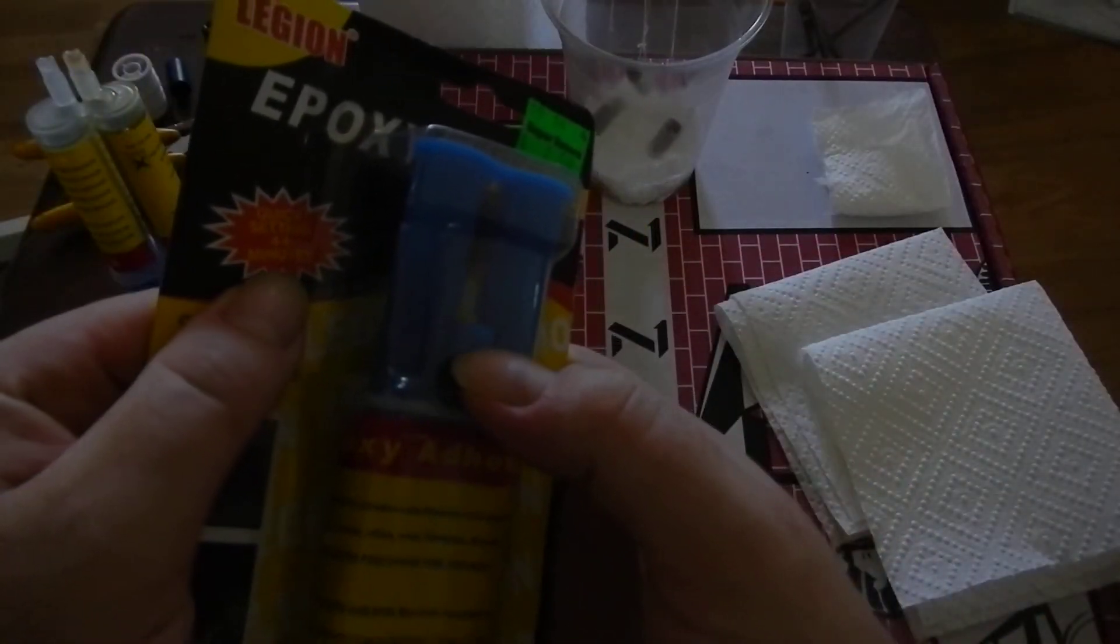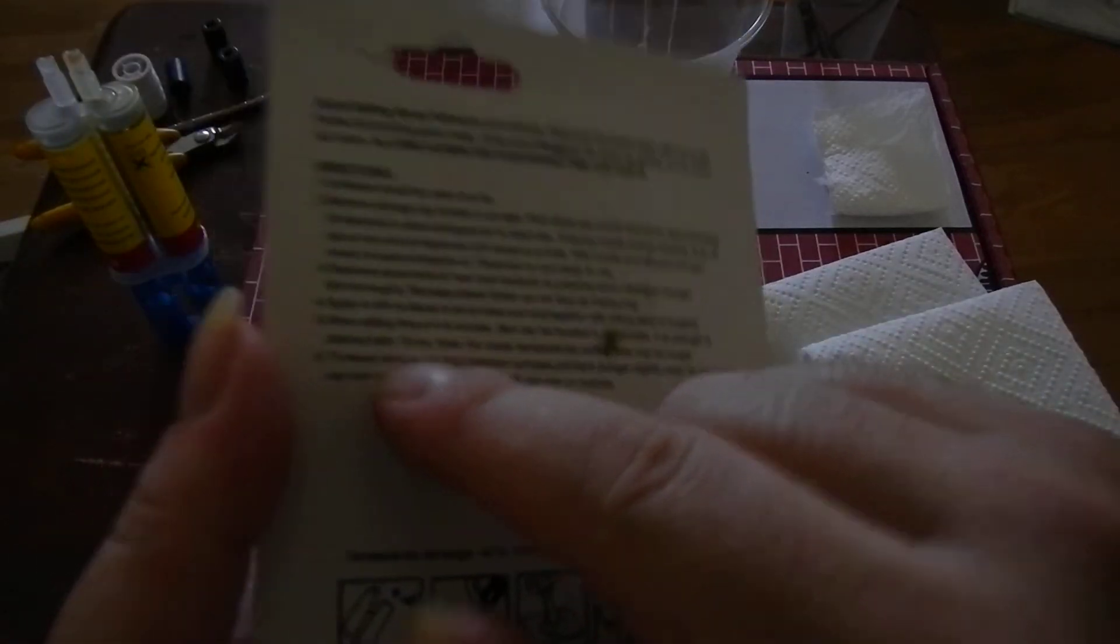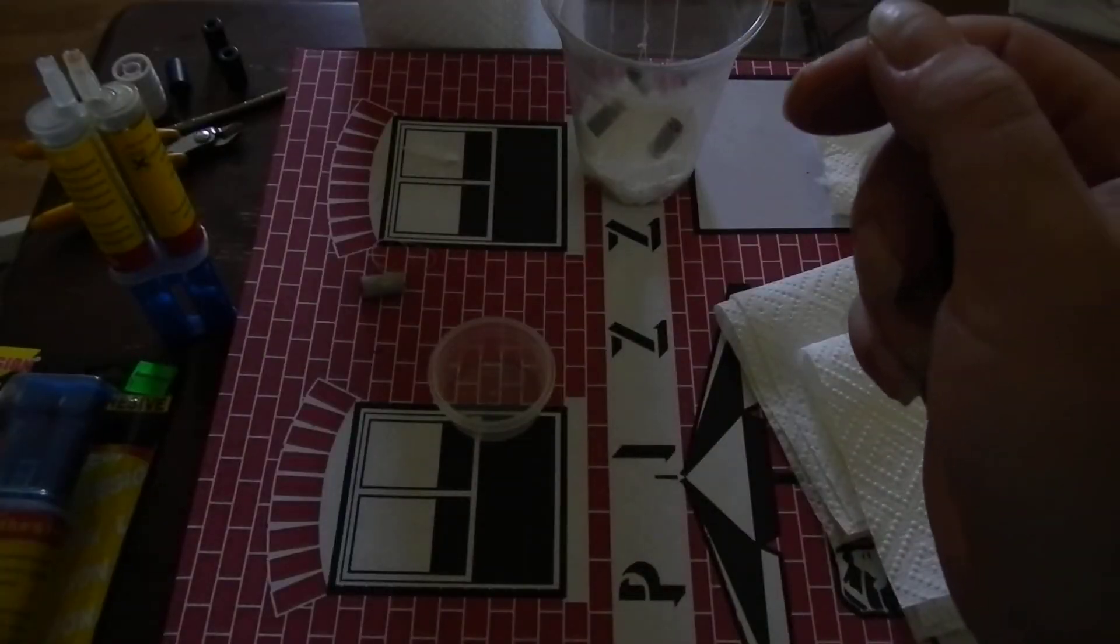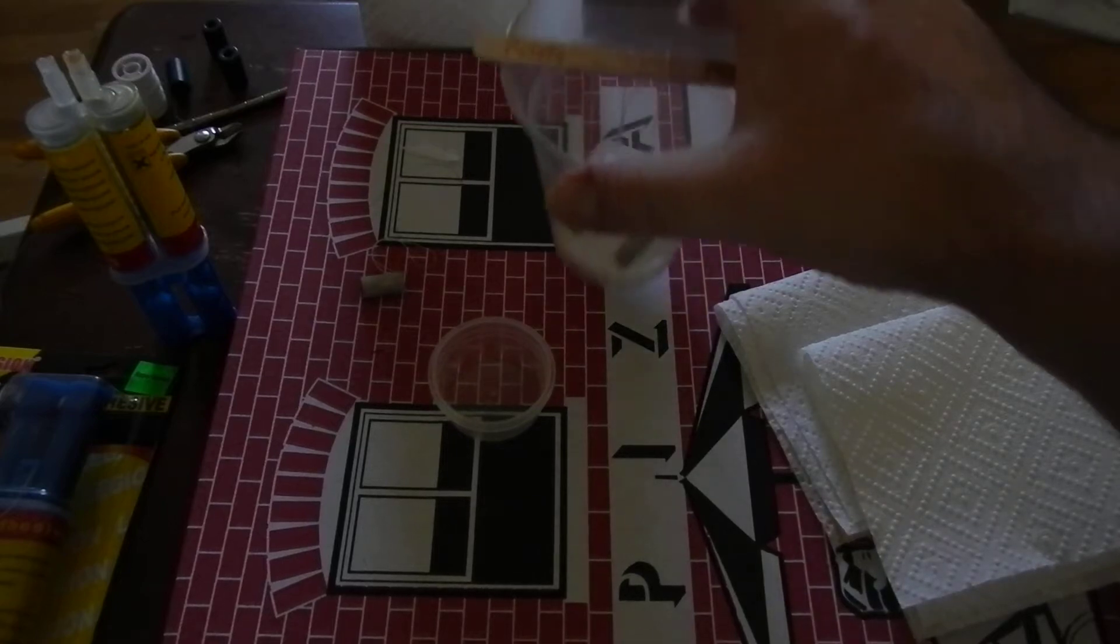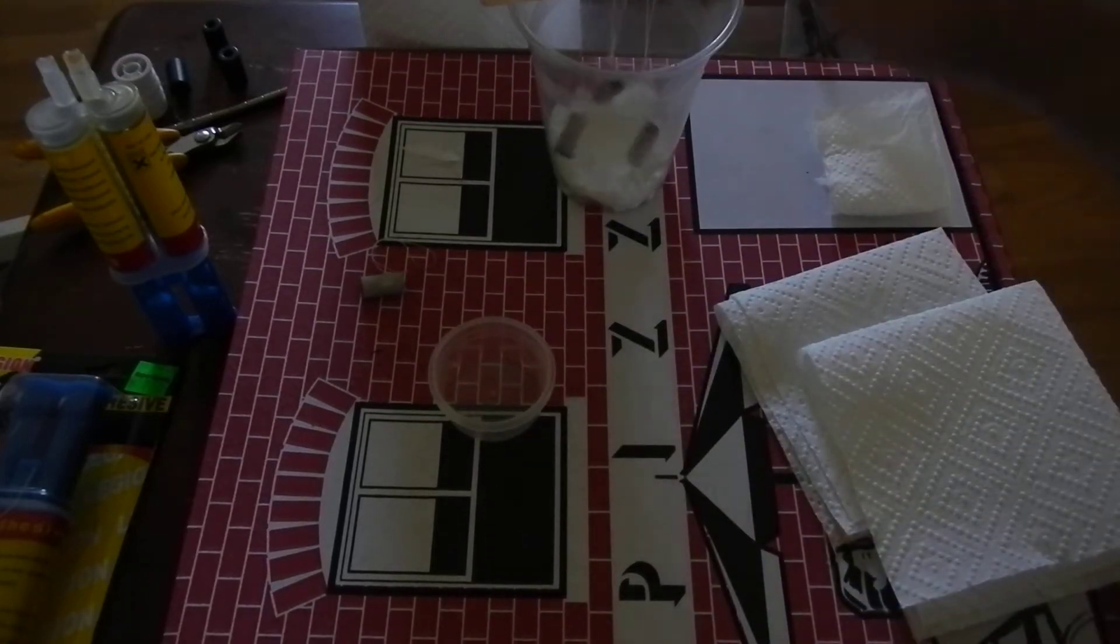This stuff sets reasonably quick. It says four to six minutes on the front of the packet. That's a bit of a lie. If you read the back, it does say setting time four to six minutes, item can be handled in 30 minutes, full strength attained after 16 hours, which is about typical for epoxy resin. So these are going to have to sit here for at least half an hour, probably a bit longer before they're going to be able to be touched.